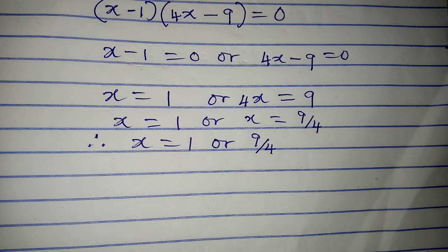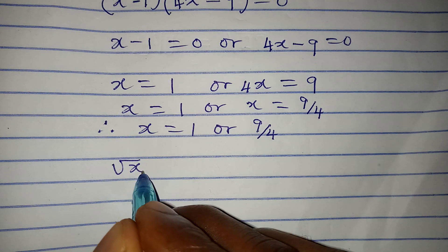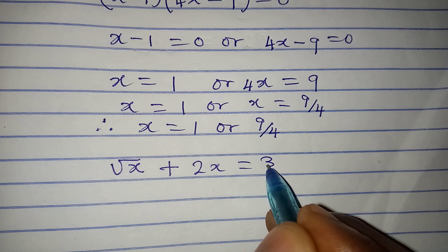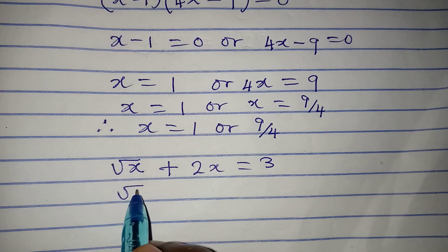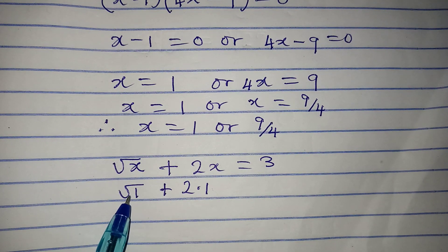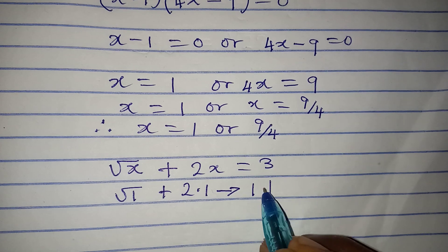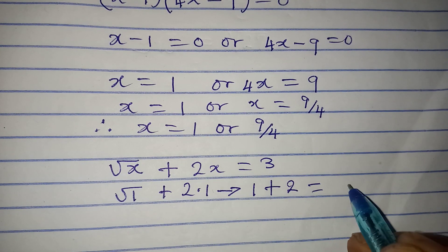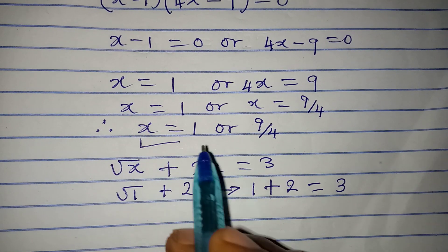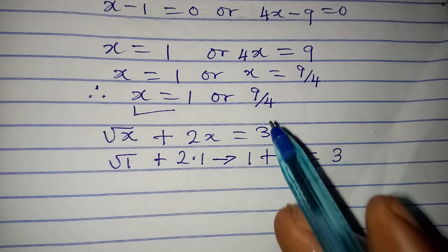The original equation is square root of x plus 2x equals 3. Substituting x equals 1: square root of 1 plus 2 times 1 equals 1 plus 2 equals 3. This is correct, so x equals 1 is a valid solution.